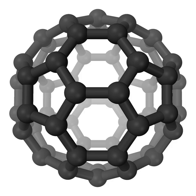Glycolaldehyde is needed to form ribonucleic acid (RNA), which is similar in function to DNA. This finding suggests that complex organic molecules may form in stellar systems prior to the formation of planets, eventually arriving on young planets early in their formation. In September 2012, NASA scientists reported that polycyclic aromatic hydrocarbons (PAHs), subjected to interstellar medium conditions, are transformed through hydrogenation, oxygenation, and hydroxylation to more complex organics — a step along the path toward amino acids and nucleotides, the raw materials of proteins and DNA, respectively.